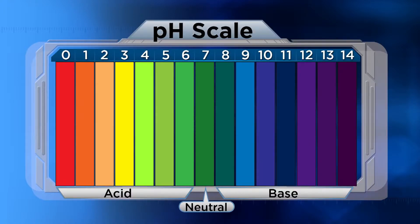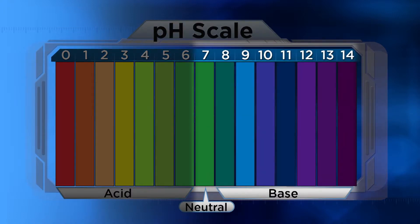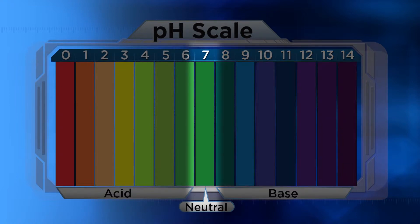The pH scale goes from 0 to 14, with 0 to 7 representing acids and 7 to 14 representing bases, also called alkali. A value of 7 on the pH scale means the solution is neutral.